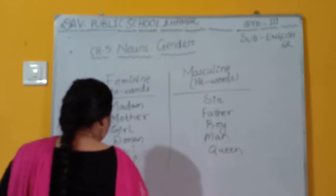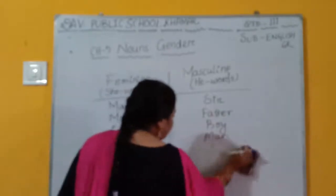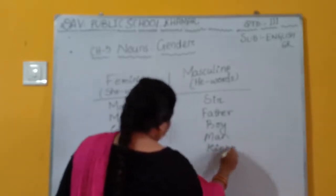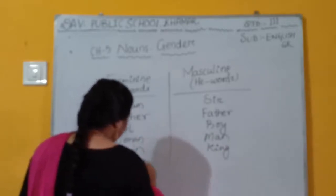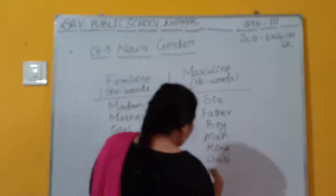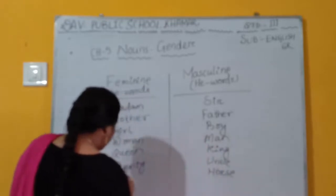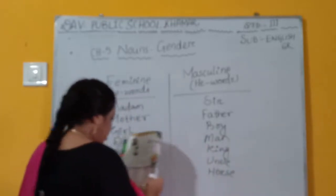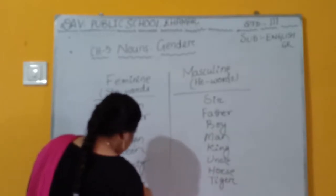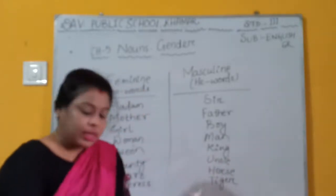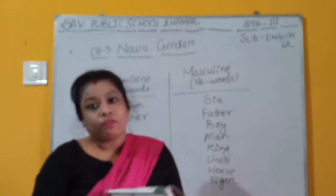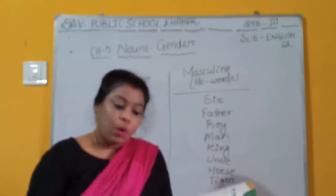Auntie and uncle. Tiger. Lion. Nephew. Hero. Actor. Husband. Princess. Horse and cow. Bull.